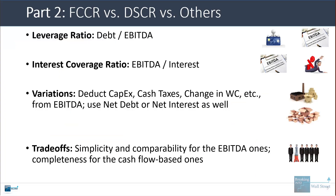The basic trade-offs are that EBITDA-based metrics are simpler to calculate, more widely agreed upon, and better for comparability — for looking at one company and seeing how it stacks up to its peer companies. But cash flow-based metrics like the fixed charge coverage ratio are better for determining the company's true cash flow and how well it could service its debt each year. It's very similar to the difference between EBITDA and free cash flow.